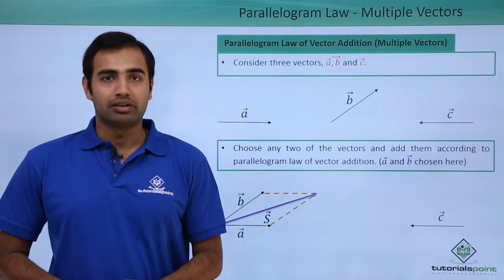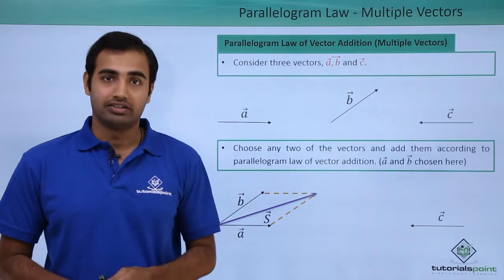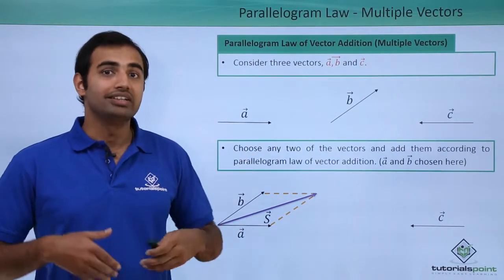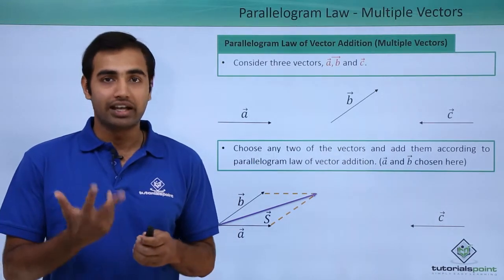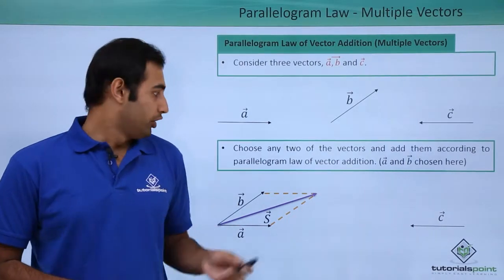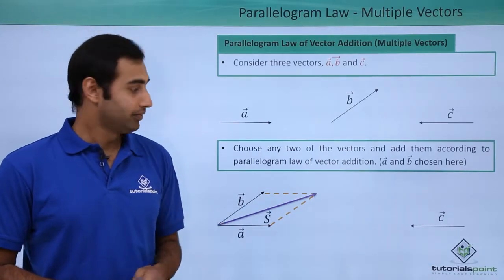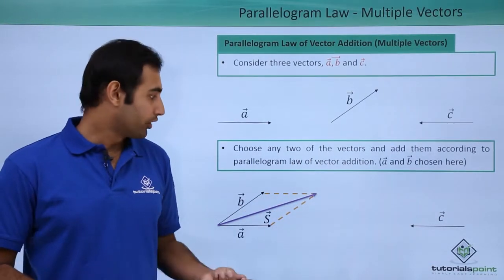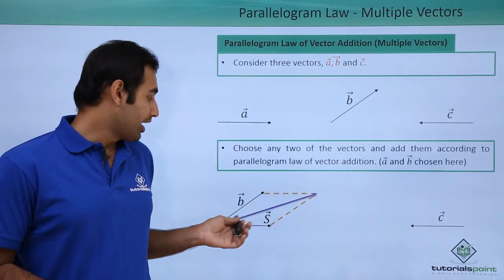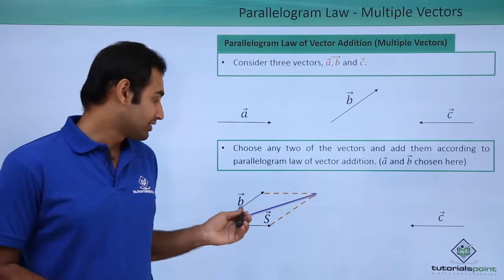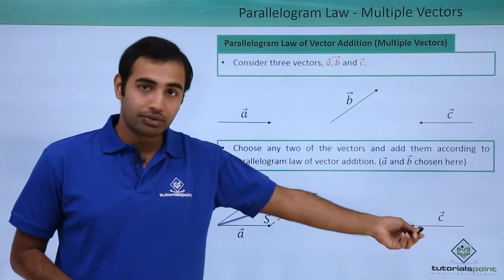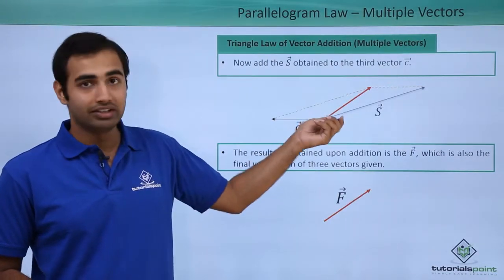Adding multiple vectors using parallelogram law: here I have vectors A, B, and C that I am supposed to add. The way to proceed is just the same as triangle law — take any two vectors first, get their resultant, and add the third vector to that resultant. I have chosen A and B as my two vectors and added them using parallelogram law by completing the parallelogram with lines parallel to both B and A. The resultant vector is simply the body diagonal starting at the point of coincidence of tails.